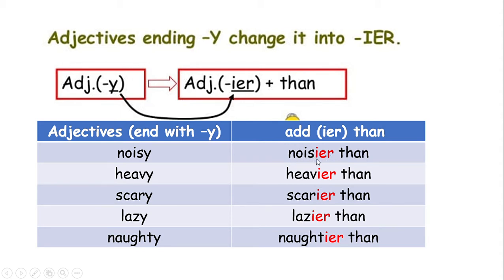So we say: noisier than. Heavy, heavier than. Scary, scarier than. Lazy, lazier than. Naughty, naughtier than. You got it, class? It's very easy. The adjective that ends with Y — when we compare it, we add -ier. It will change to -ier.